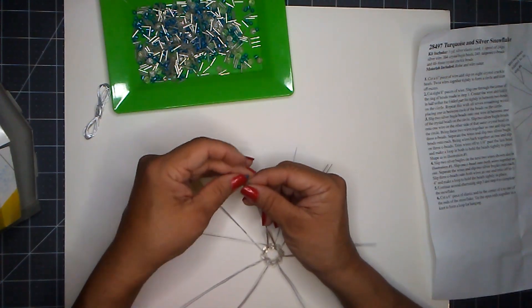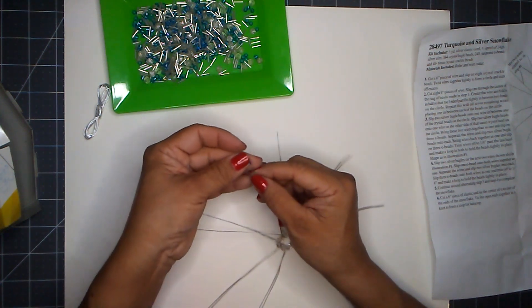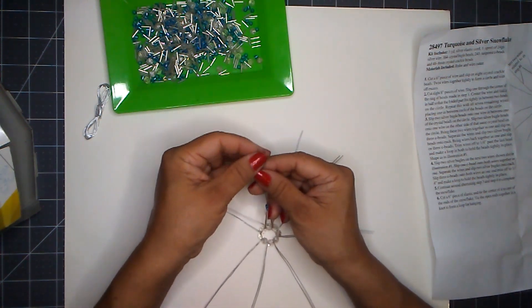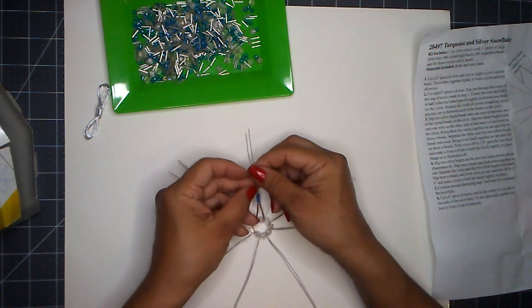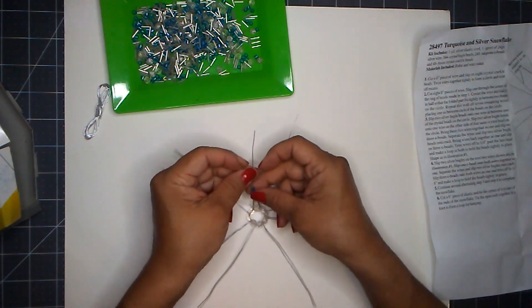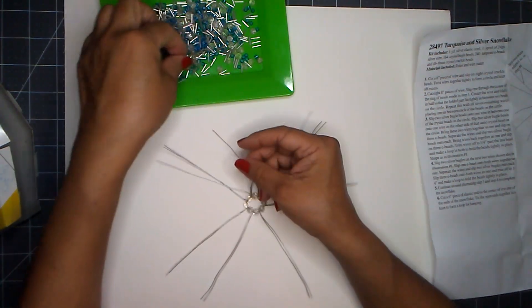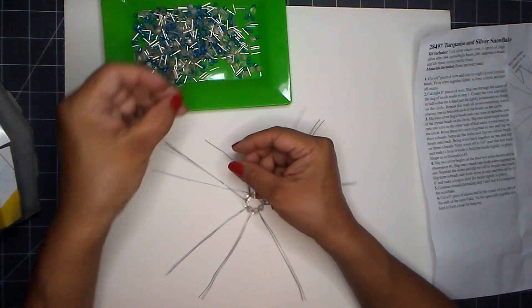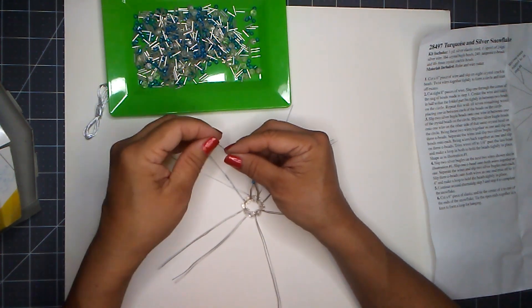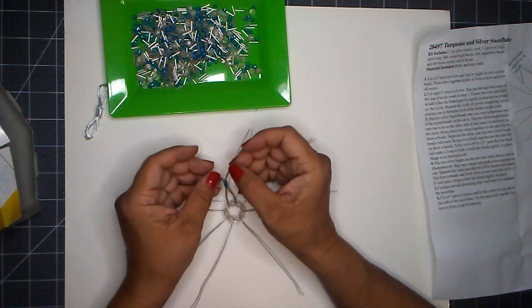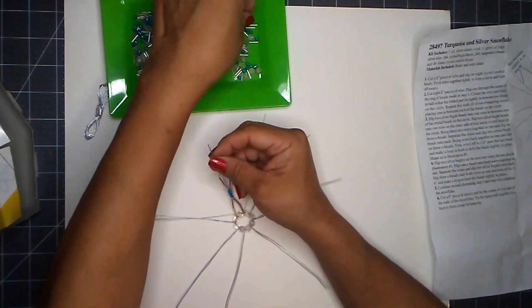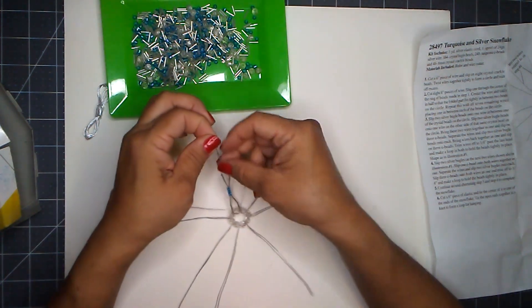And you slip it on to the two wires together, like that. Now we separate the wire again. I'll try not to cross your wires when you're doing this. Now you put on two bugle beads on each side of your wire. Now you bring the wires back together one more time.